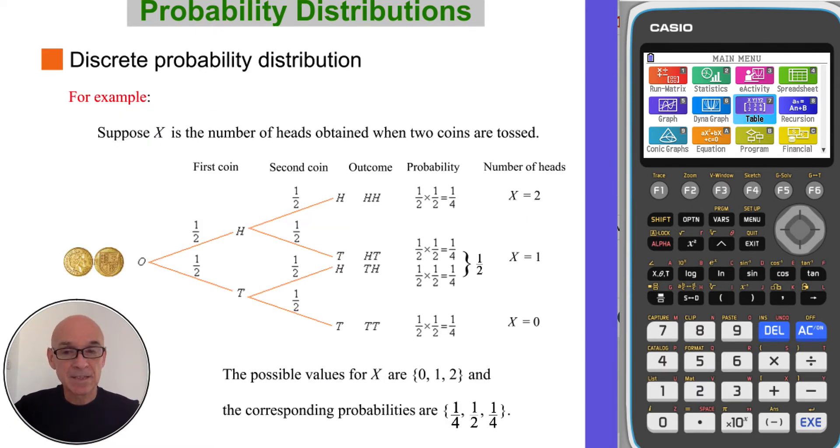For example, if X is the discrete random variable, the number of heads obtained when two coins are tossed, as shown in the tree diagram here. So you can see the four different outcomes, head-head, head-tail, tail-head, and tail-tail, and the associated probabilities.